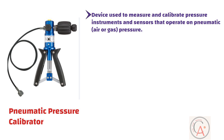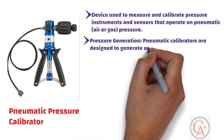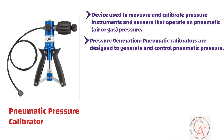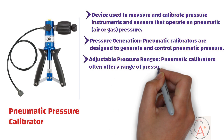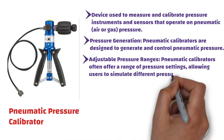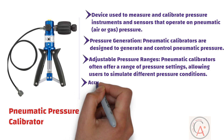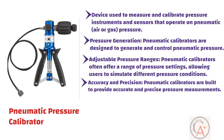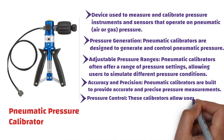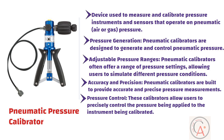Here are some key features and functions of a pneumatic pressure calibrator. Pneumatic calibrators are designed to generate and control pneumatic pressure, typically using compressed air or gas to generate a precise and adjustable pressure applied to the instrument under test. They often offer a range of pressure settings, allowing users to simulate different pressure conditions — important when calibrating instruments across a variety of pressure ranges. Pneumatic calibrators are built to provide accurate and precise pressure measurements, and allow users to precisely control the pressure applied, which is essential for achieving accurate calibration results.